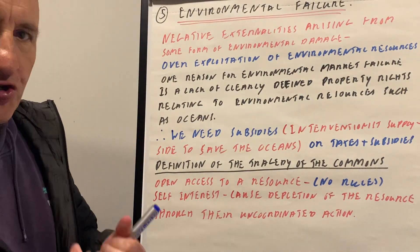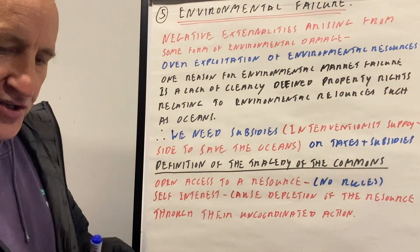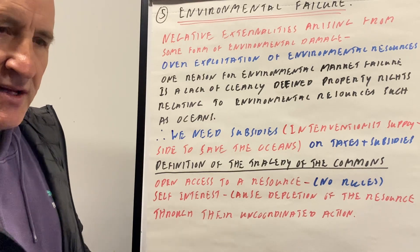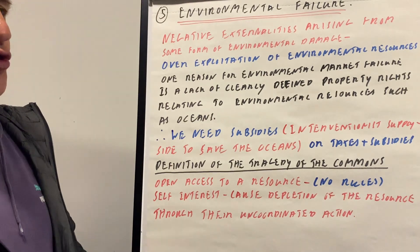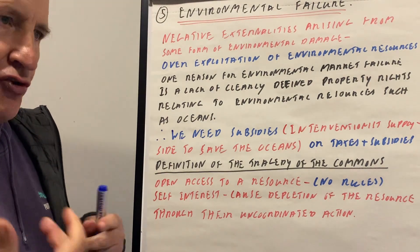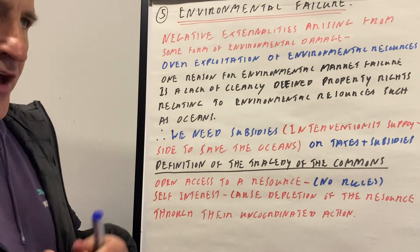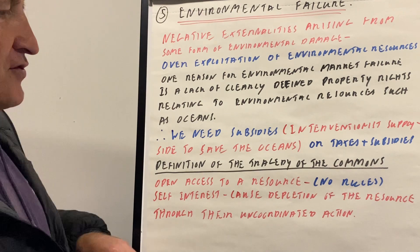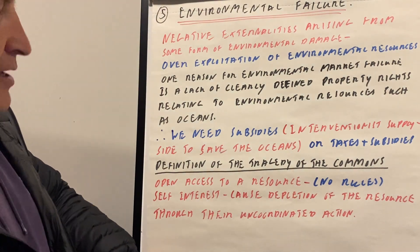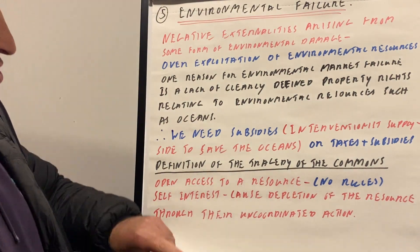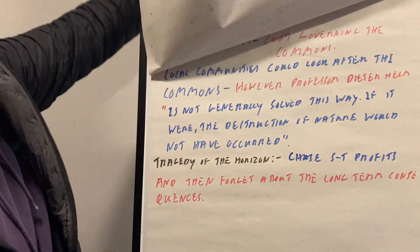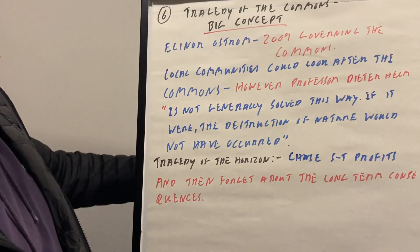The tragedy of the commons is where everybody follows their own self-interest, they all go and destroy the resource, and by destroying the resource everybody suffers. That is an example of environmental failure.